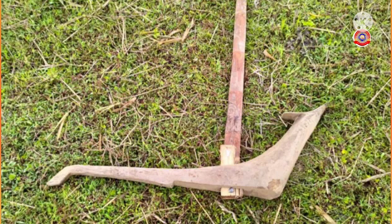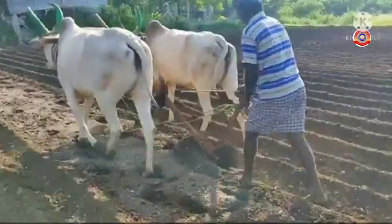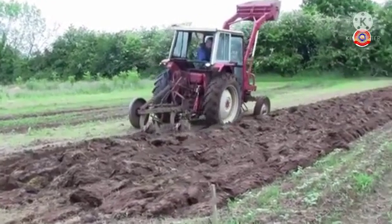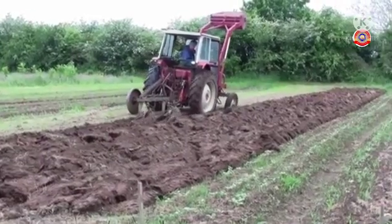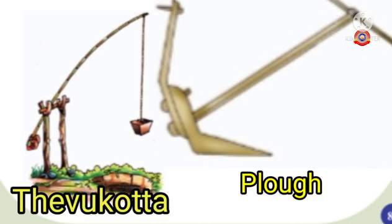Dear children, look at this picture. Do you know what this is? It is a tool used for agriculture and its name is plough. This plough is used for ploughing the field. But today, tractors are used in the place of plough for ploughing the field. What do you see in this picture? It is Tevukota. In olden days, farmers used this Tevukota to drain water into the field. But nowadays, we cannot see this Tevukota and plough. They were used by farmers in olden days to make their work easier.